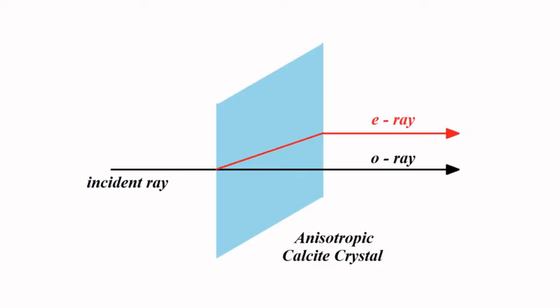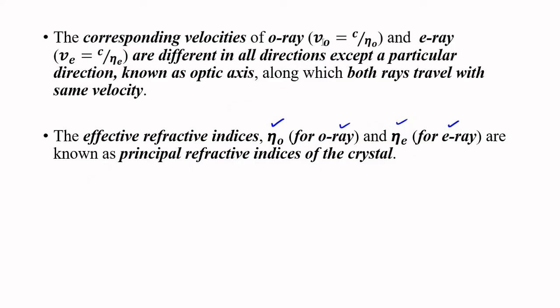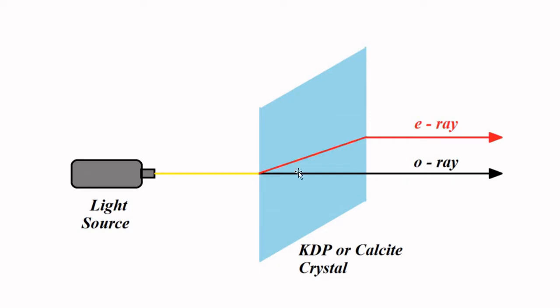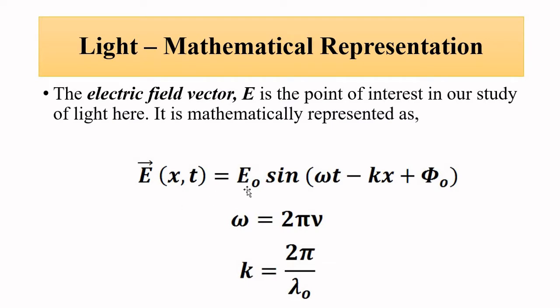Because of the two different refractive indices offered by the crystal, the velocities of both rays are different. For the ordinary ray it is c/η₀, and for the extraordinary ray it is c/ηₑ, where c is the velocity of light in air. As a result, one light ray passes straight without any deviation while the other suffers refraction at both interfaces and emerges slightly shifted, introducing a phase shift between the o-ray and the e-ray.